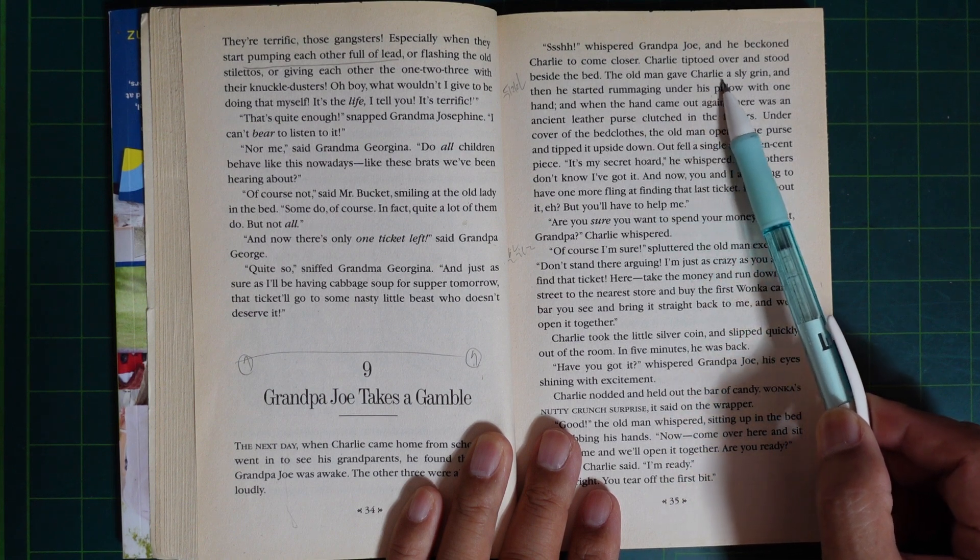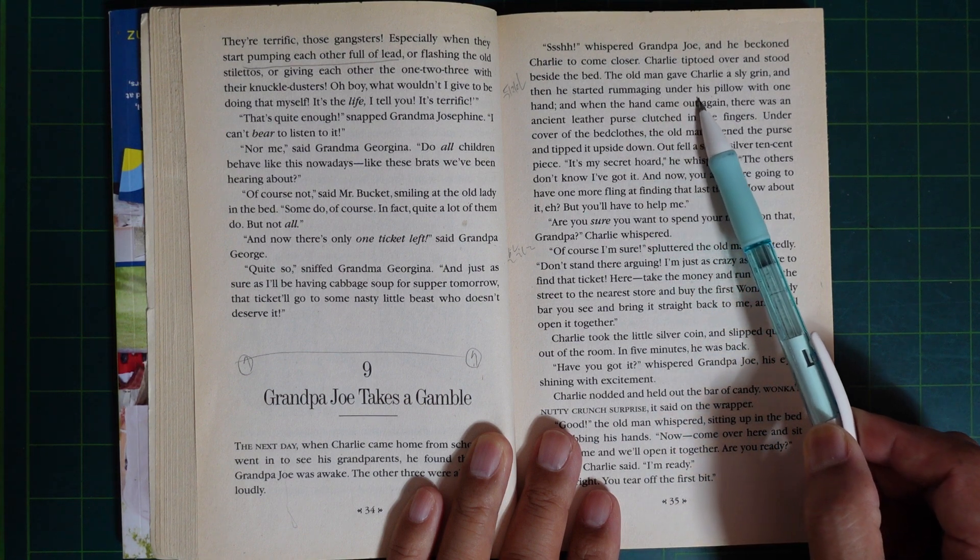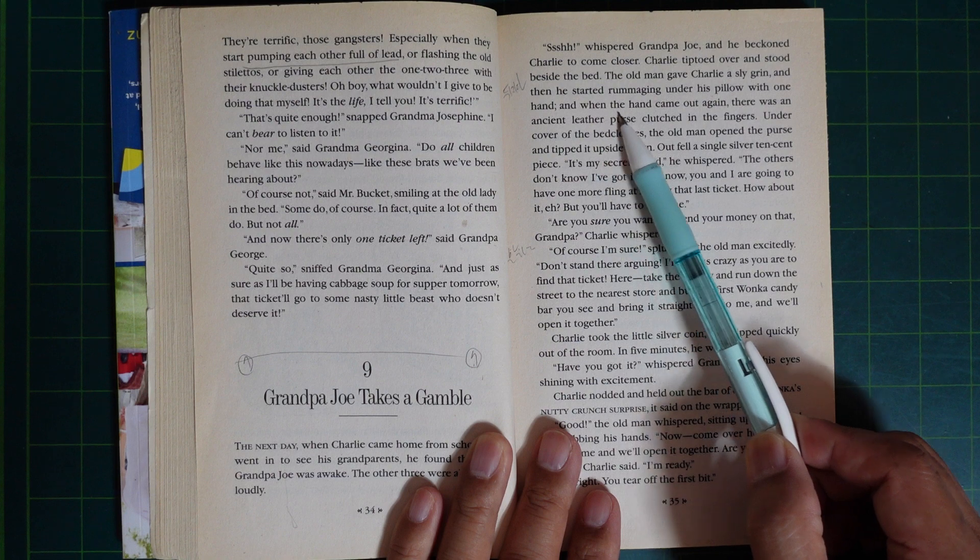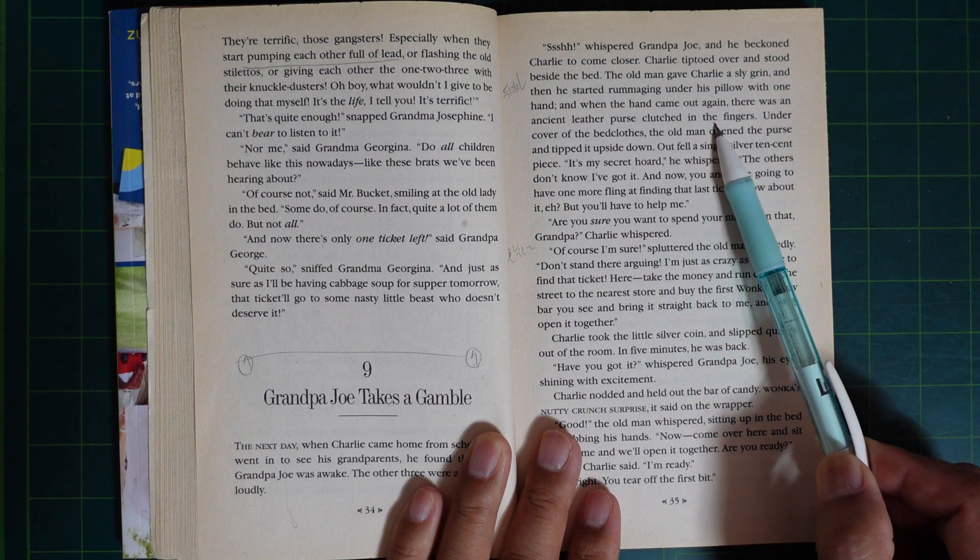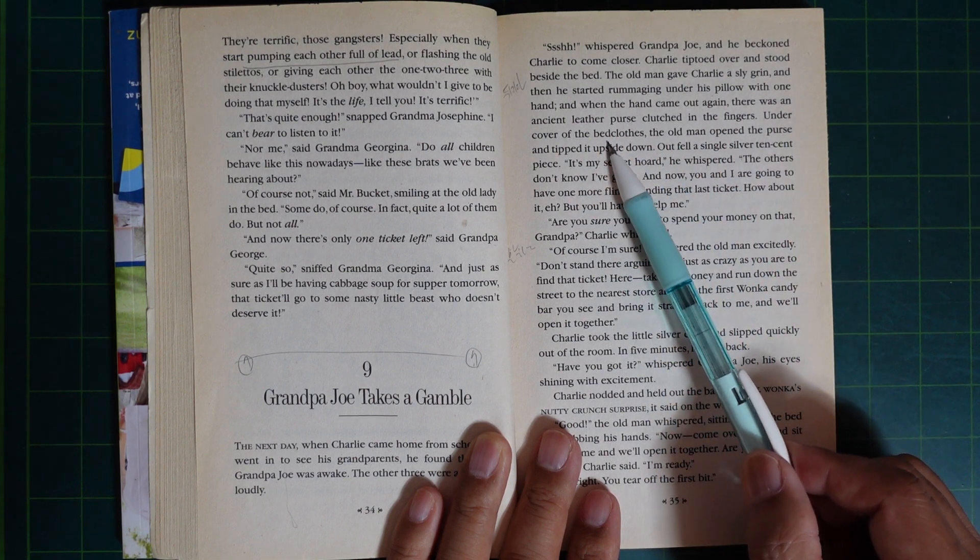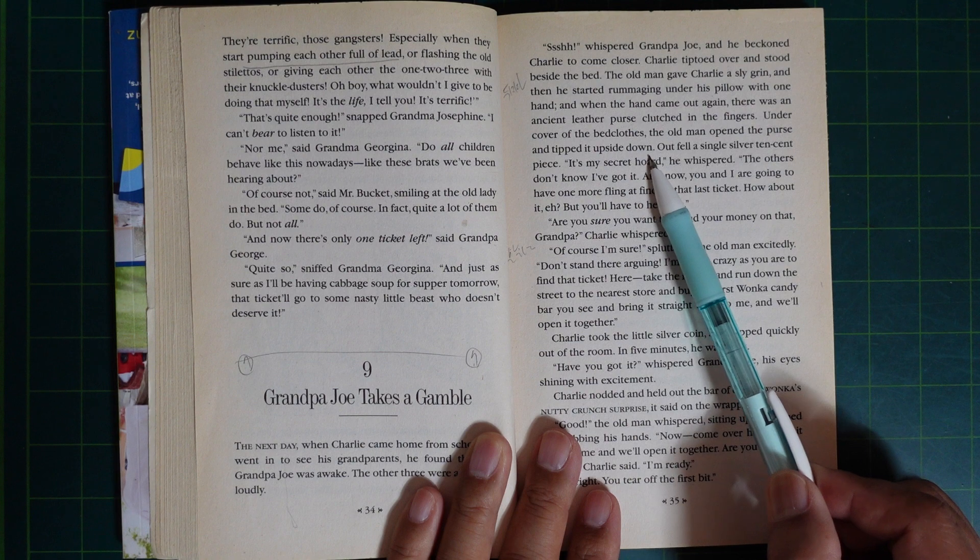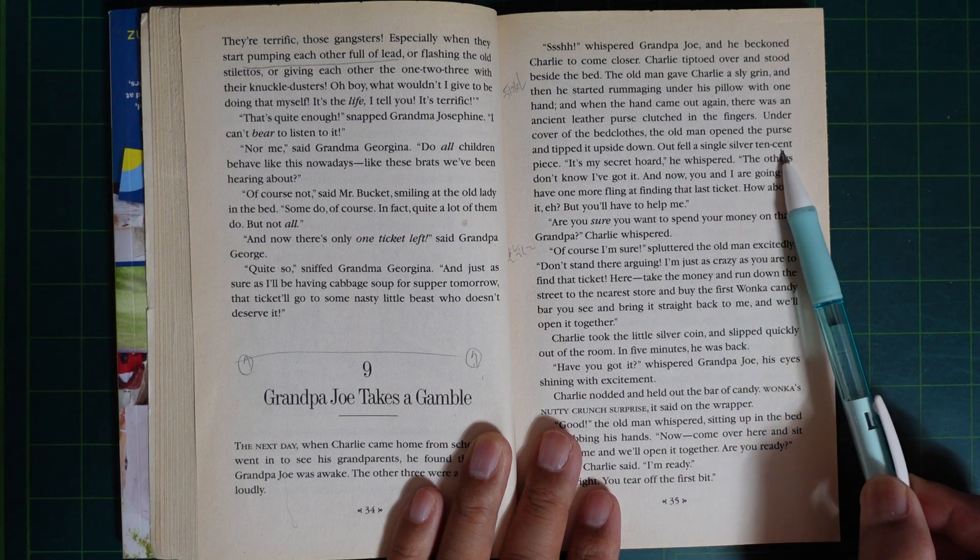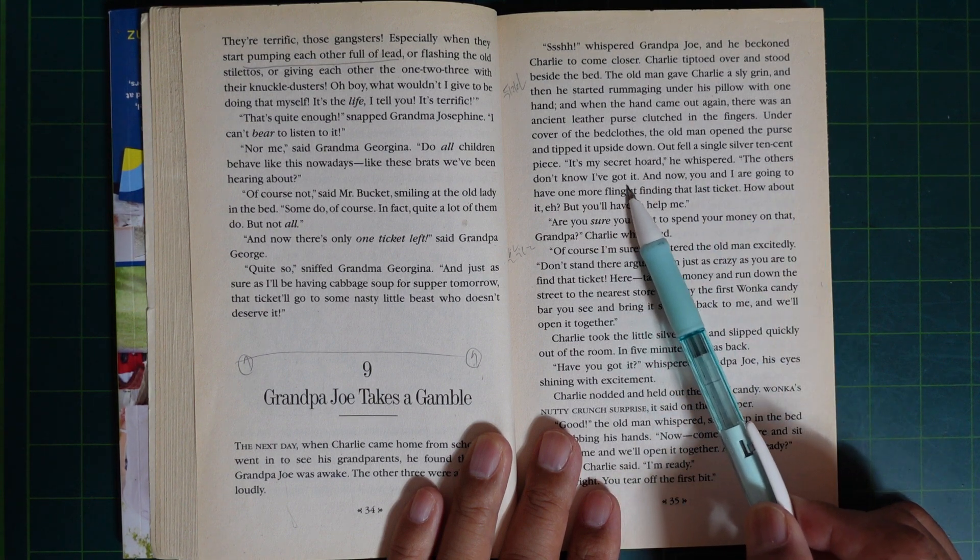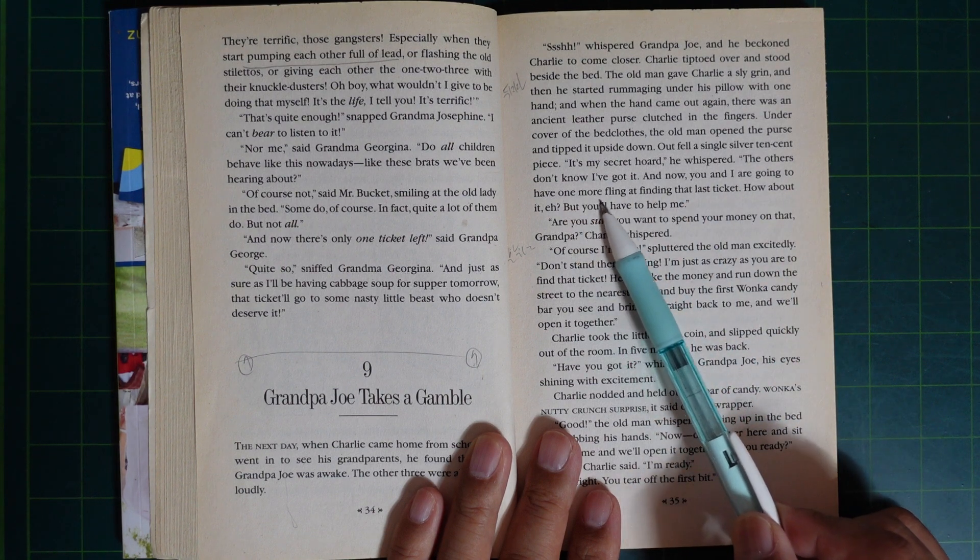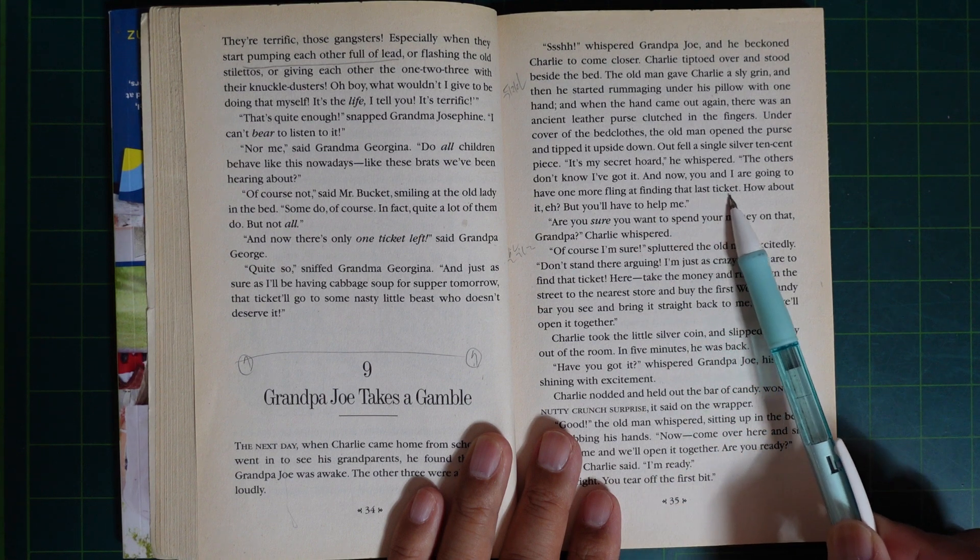The old man gave Charlie a slight grin and then he started rummaging under his pillow with one hand. And when his hand came out again, there was an ancient leather purse clutched in the fingers. Under the cover of the bedclothes, the old man opened the purse and tipped it upside down. One silver ten cent piece fell out. This is my secret hoard, he whispered. The others don't know I've got it. And now you and I are going to have one more fling at finding the last ticket. How about it?